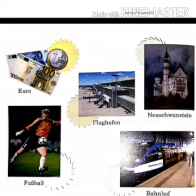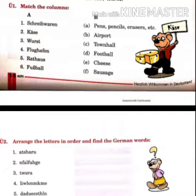'Wiederholung' means revision. In the revision, 'Übung' means exercise. In exercise one, you have to match the proper things — for example, 'Schreibwaren' means stationary things, so what will come under Schreibwaren?